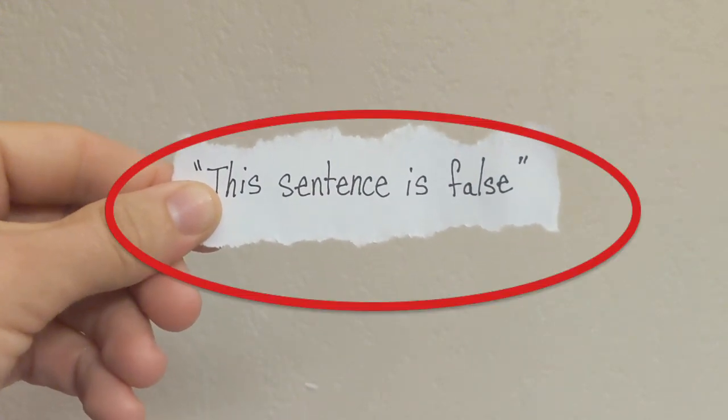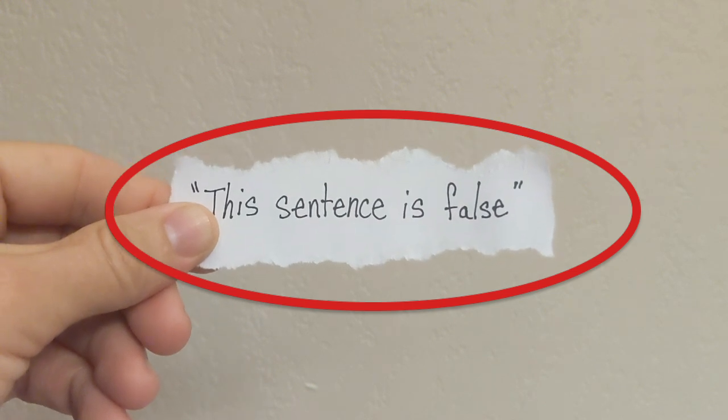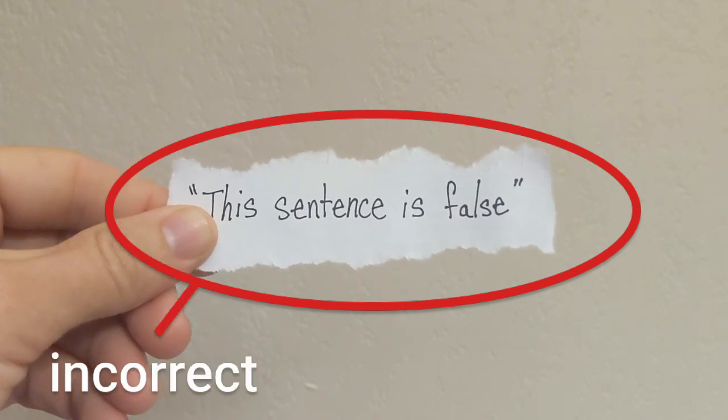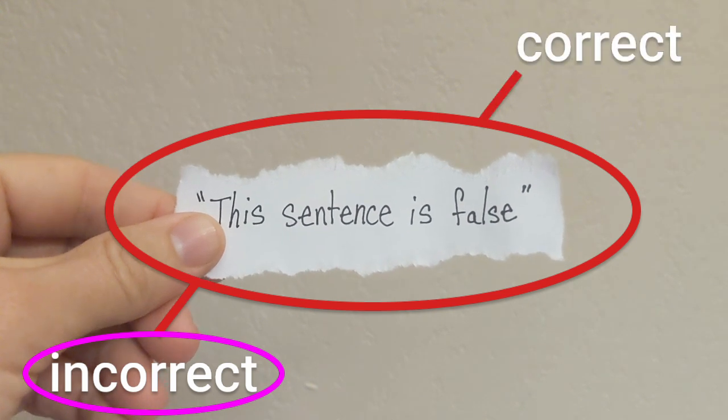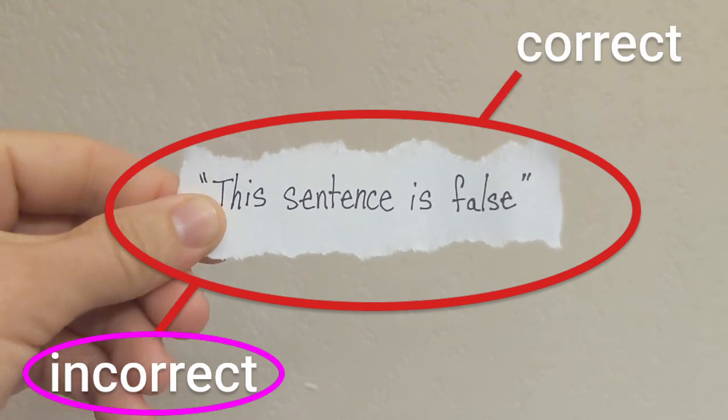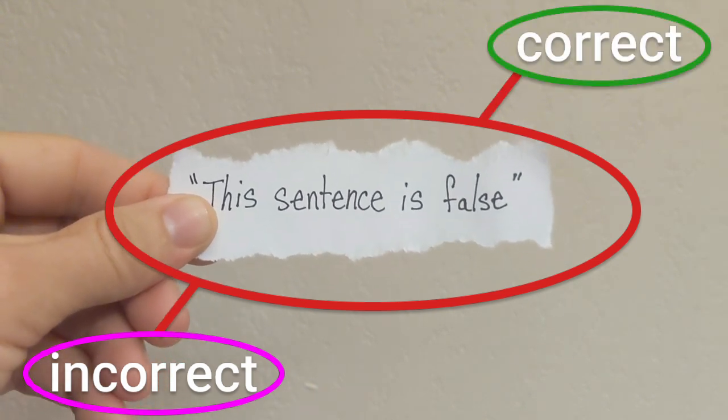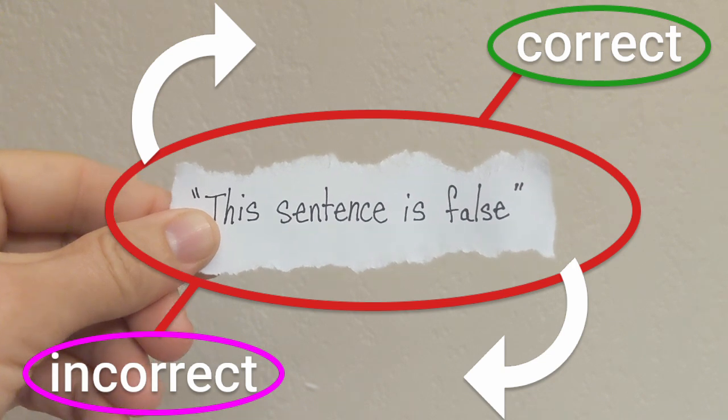If the sentence is correct, then what it claims about itself, that it is false, is incorrect. But if the claim it's making is incorrect, then the sentence is correct in claiming that it itself is false. But we've just gone in a circle. And now we're back to where we started. Paradox.